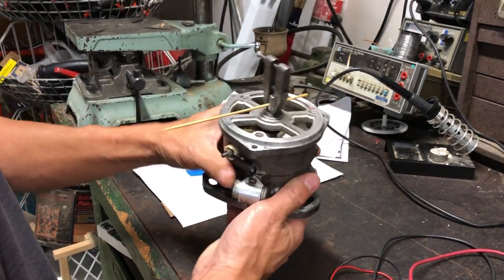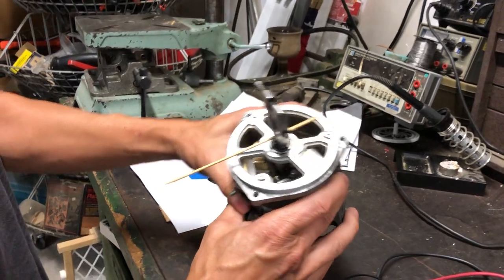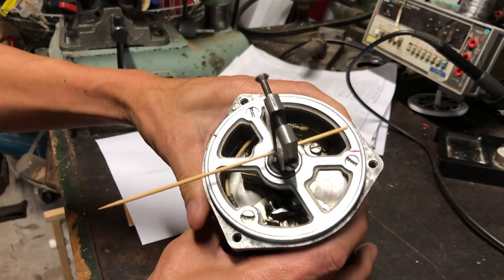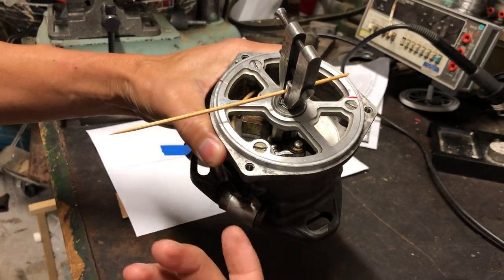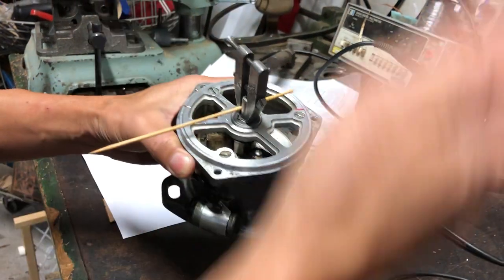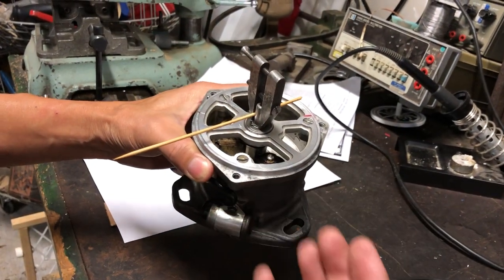This is a distributor out of my Fiat Dino Spyder, and it's a dual-point distributor. The idea is it rotates and creates the spark for the engine, for the V6 engine.